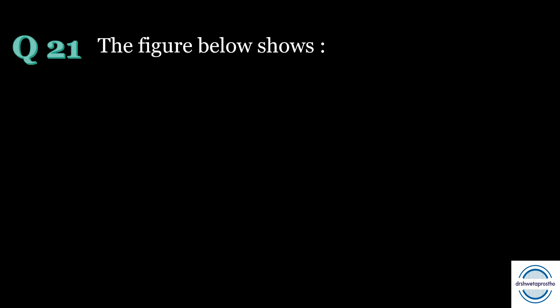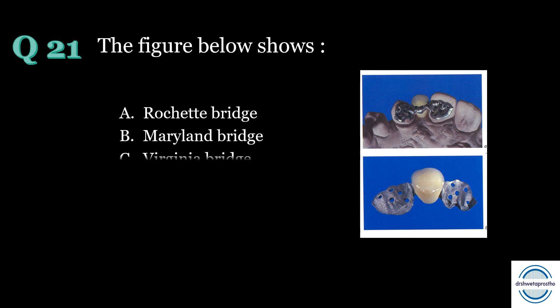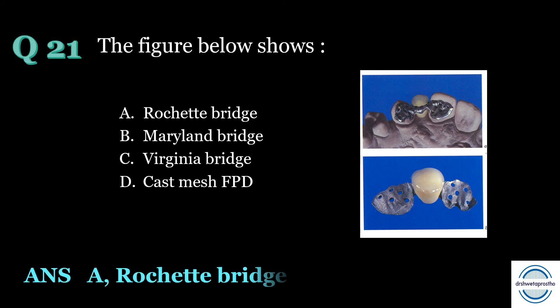Question number twenty-one: The figure shows — A) Rashid Bridge, B) Maryland Bridge, C) Virginia Bridge, or D) cast mesh FPD? The answer is A — Rashid Bridge. It is a resin-bonded bridge. All the options listed are resin-bonded bridges. The Rashid Bridge has wing-like retainers with funnel-shaped perforations through them to enhance resin retention.